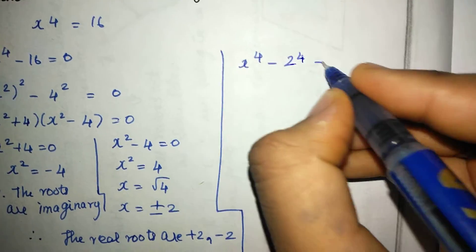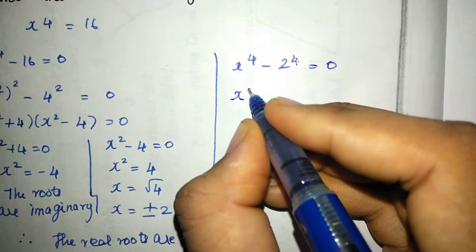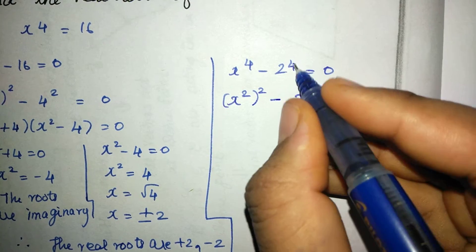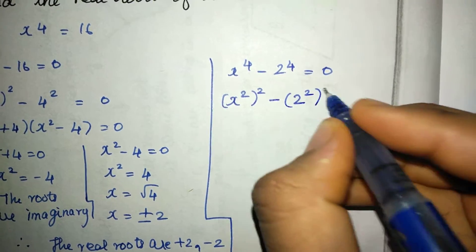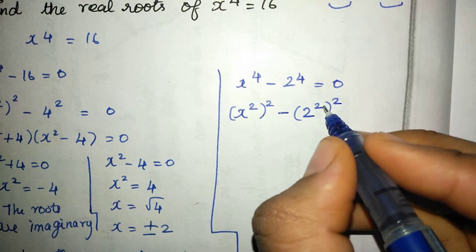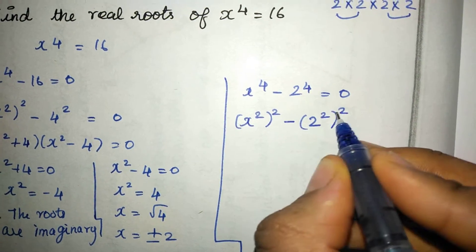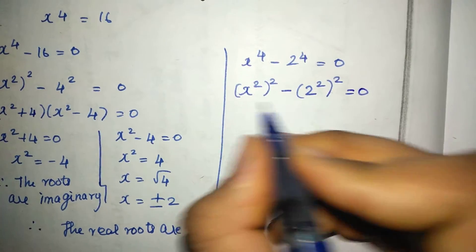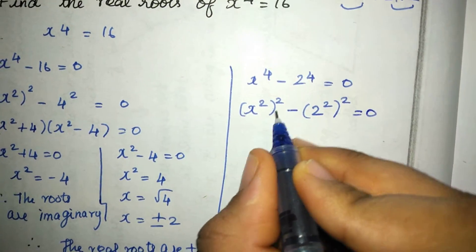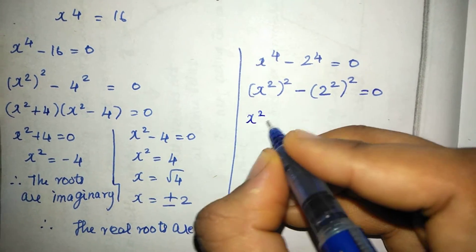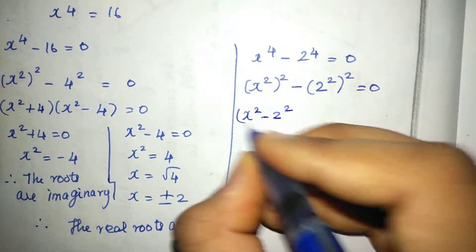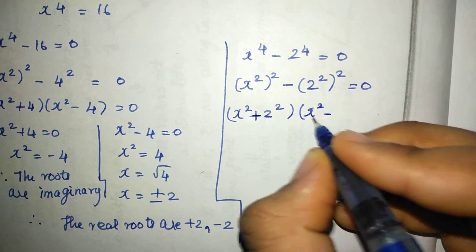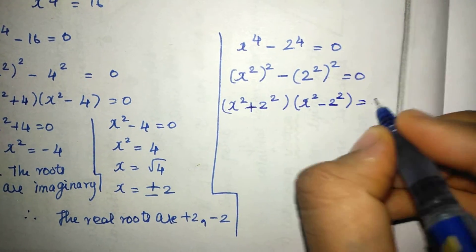We can verify: substituting x = 2, we get 2⁴ = 16, which is correct. Rewriting x⁴ − 16 = 0 as (x²)² − (4)² = 0 confirms the a² minus b² format, giving (x² + 4)(x² − 4) = 0.